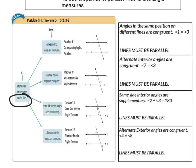If a transversal intersects two parallel lines, same side interior angles are supplementary. This is the one and only different one — same side interior angles are going to add up to equal 180 degrees. So in this case, angles two and angle three, if I add them together, they're going to equal 180. Angle two plus angle three equals 180 degrees, and again, it's only true if the lines are parallel.